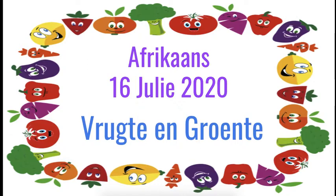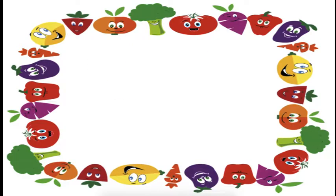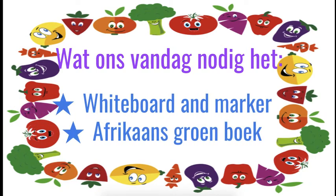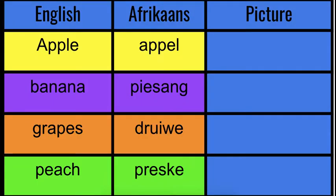I hope you still remember your fruits. So let's see what ons vandag nodig het — what do you need for today? Your whiteboard and your marker and your Afrikaanse groenboek. So we are going to go over the vruchte first — the fruits. When I say the word, you draw the picture and then check if you're correct.